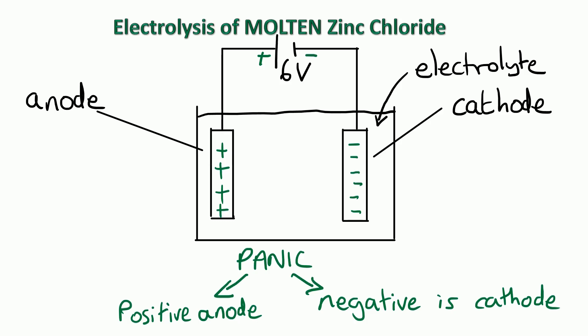We also need to consider what ions zinc chloride is made up of. So zinc is in that central part of the periodic table, the transition metals, and if in doubt they make two plus ions. And chloride, well chlorine is in group seven, that's a halogen, they all make one minus ions.